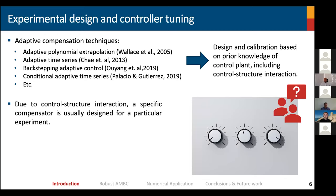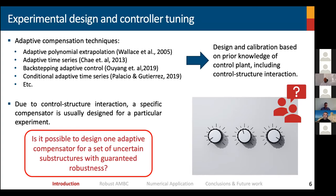The issue from this group of adaptive compensation techniques is that they're usually designed and calibrated based on prior knowledge of the control plan, which includes the specimen. Due to control-structure interaction, a specific compensator is usually designed for a particular experiment. So if you want to study building A, we need to tune all these gains and then run the test. If we want to study building B, we need to do it all over again, which is quite cumbersome and time consuming. So the question that arises is, is it possible to design one adaptive compensator for a set of uncertain substructures with guaranteed robustness?